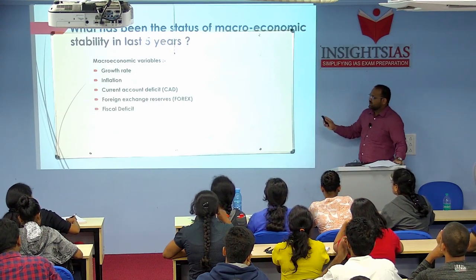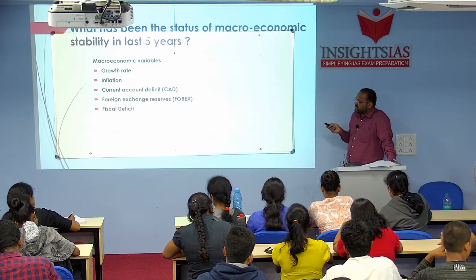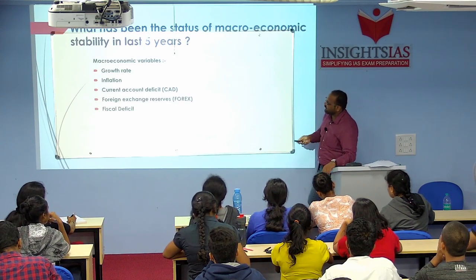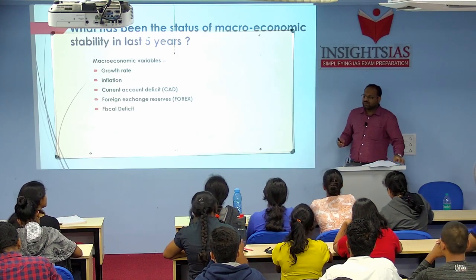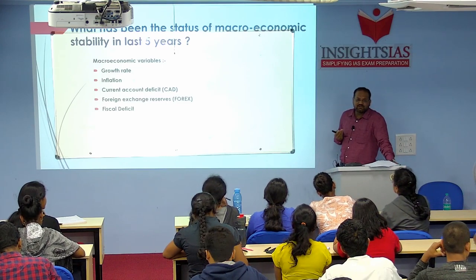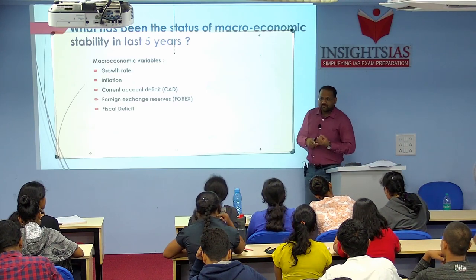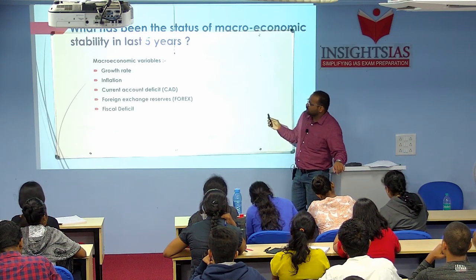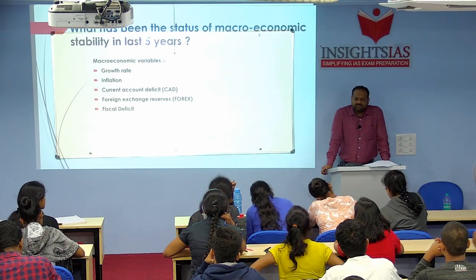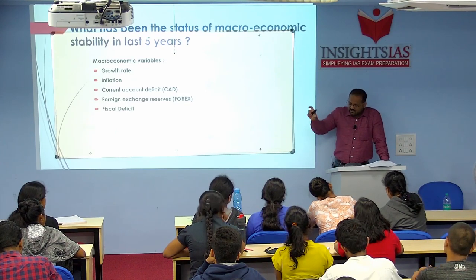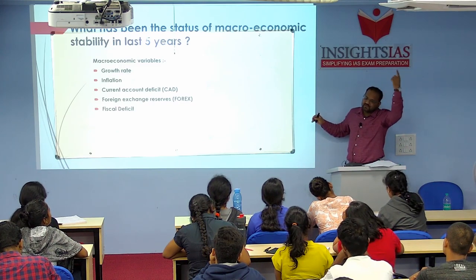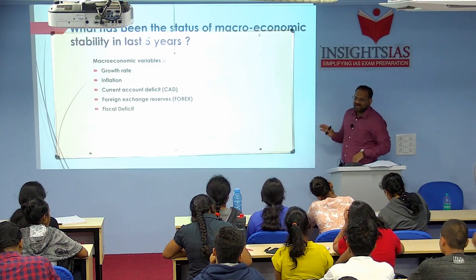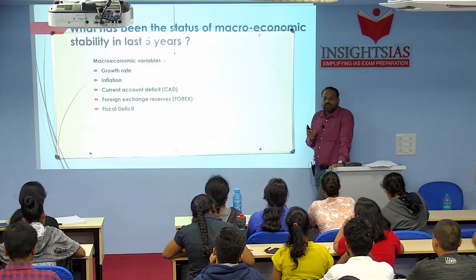Inflation: the general price rise relative to a base year. RBI uses CPI. The survey says inflation has been within manageable limits and was just half of what it was in the previous five-year period. Inflation in 2014-19 was half of what it was in 2009-14. Food inflation was within 2%. Though no specific figure is given, you can use this comparative data.